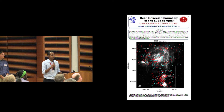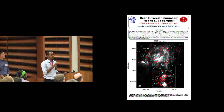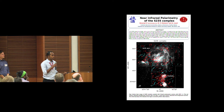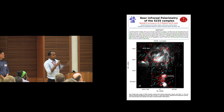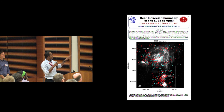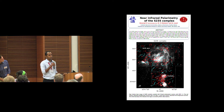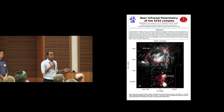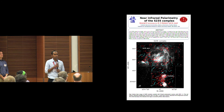I'm Devraj from INAOE, Mexico. I'm presenting near-infrared polarimetric observations of the S235 molecular complex. It's a very interesting region with star formation going on and an expanding H2 region. I'm trying to understand how H2 regions affect the magnetic field. You can see the region has a semi-shell-like structure, and the red vectors showing background starlight polarization seem to trace around the shell, suggesting H2 regions are affecting the magnetic field structure. In the future, we can investigate how the magnetic field affects triggered star formation in this region.